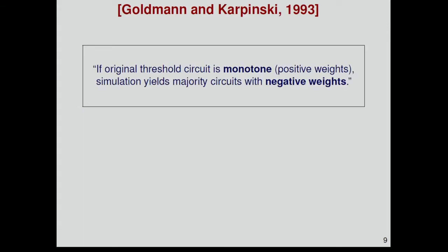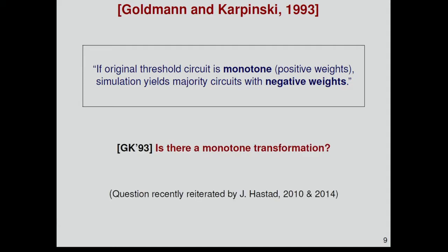Goldman and Karpinski, back in 93, observed the following. If the original threshold circuit is monotone, which means that the weights are positive inside each gate, then this simulation that reduces the weights from exponential to polynomial will produce majority circuits with negative weights. They asked, is there a monotone transformation or is this introduction of negative weights inherent in this transformation?